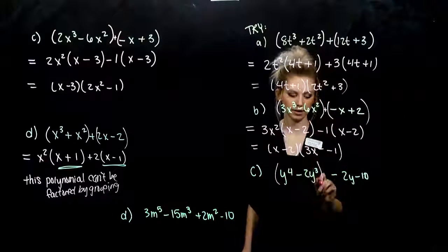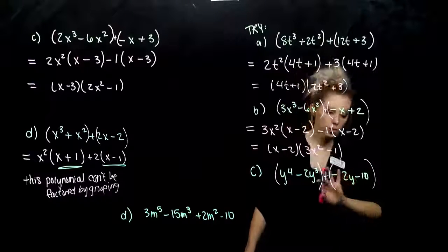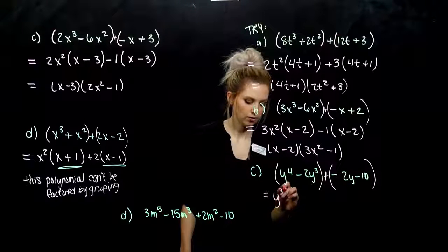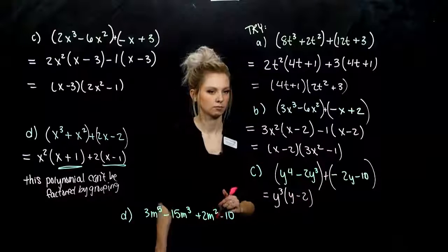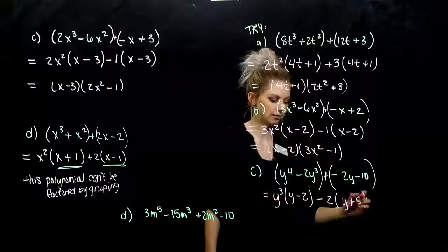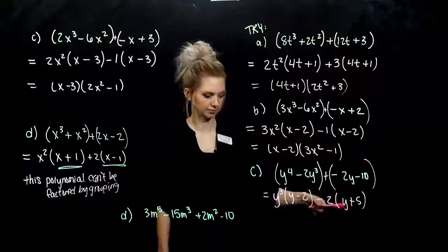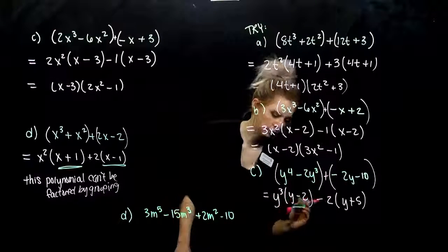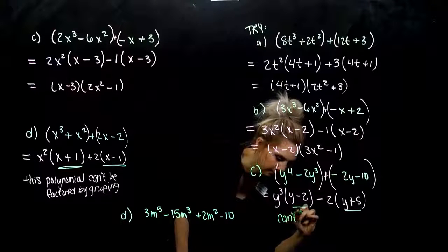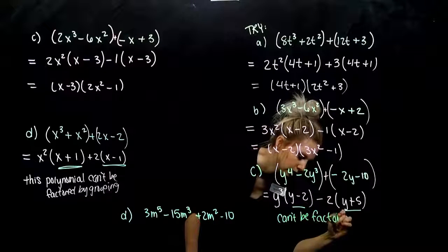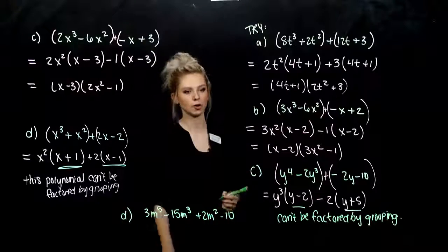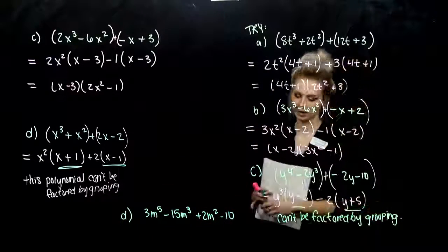There's another negative below, so it needs to go with the third term. Common between the first two: y cubed, leaving y minus 2. Common between the second two: negative 2, leaving y plus 5. But do these match exactly? No — they're not matching. So this polynomial can't be factored by grouping. We could try changing the order and regrouping, but it's not going to get you anywhere.